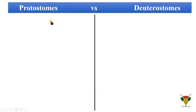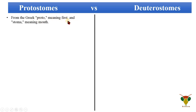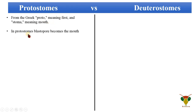The word 'protostome' is taken from the Greek language: 'proto' means first and 'stoma' means mouth. You can analyze from the meaning of the word that formation of the mouth is the first priority of protostomic development. So the blastopore in protostomes becomes the mouth and not the anus.